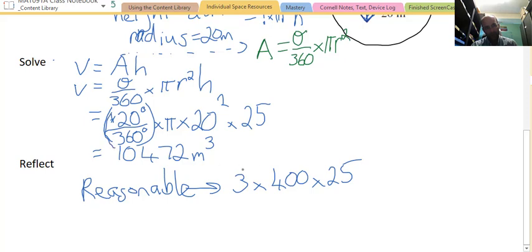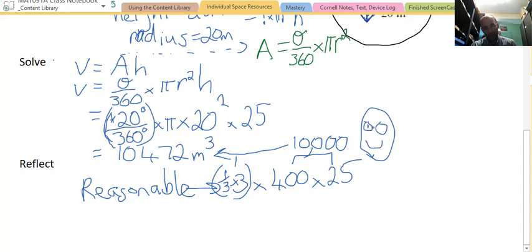So, if you think about it, a third times 3 is 1. So, we just really have 400 times 25. 4 times 25 is 100. So, we have 100 times 100. So, the answer should be a little bit bigger than 10,000. And look, it is. So, it gives us an idea of what's reasonable. And we have solved the problem. Time for you to do some mastery.